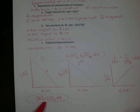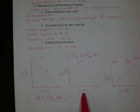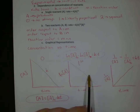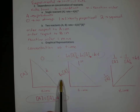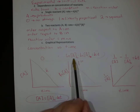So we have integrated rate laws and their graphical representations. To be clear, this is not a 'first order graph' — it is a graph that indicates that my reaction is first order. If I have a linear graph of ln[A] versus time, that indicates that my reaction is going to be first order.